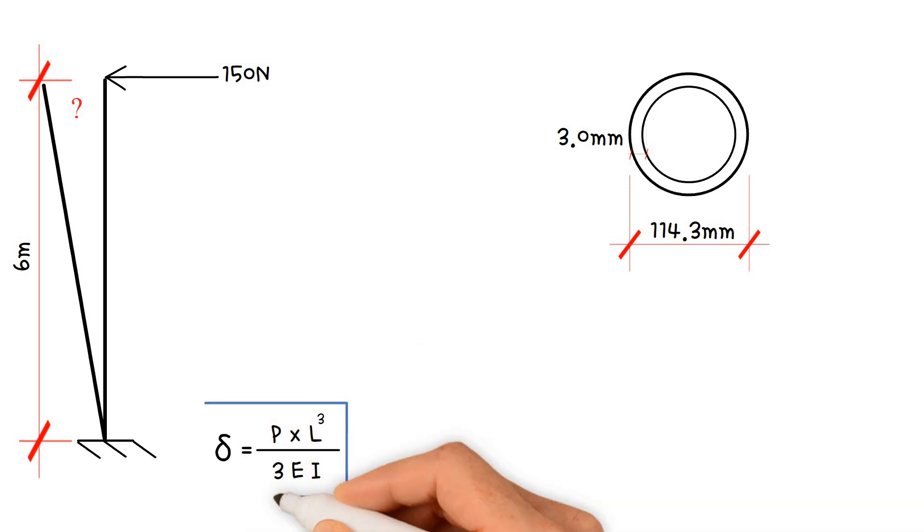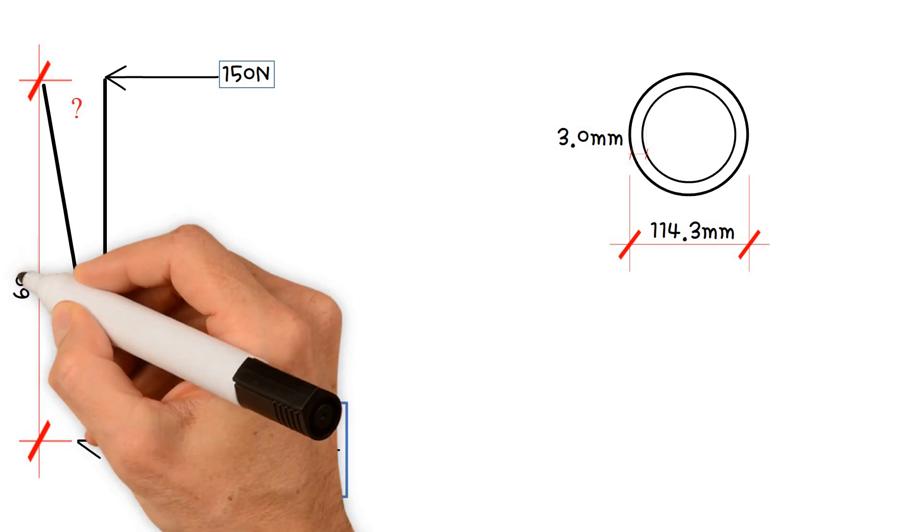We need to use this equation to calculate the lateral deflection of a flagpole. P is a horizontal point load of 150 newtons applied to the top of the pole. L is the flagpole's height, 6 meters. Convert it to millimeters, which equals 6,000 millimeters.